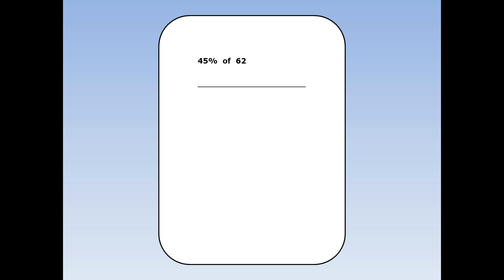Find 45% of 62. First, we find 10%. And to do that, we divide by 10. 62 divided by 10 is 6.2. Next, we find 40%. That's 10% times 4. 10% is 6.2. 6.2 times 4 is 24.8.